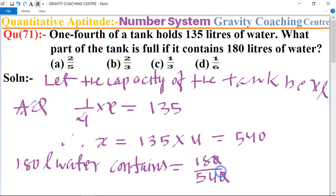So zero zero cancel. 18 divided by 54 equals 1 upon 3 part of tank.